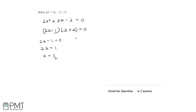Then we have x plus 2 equals zero, and bringing the 2 to the other side, x is equal to minus 2. These are our two solutions, but that's for the equation 2x squared plus 3x minus 2 equal to zero. We need to solve the inequality where it's more than zero.